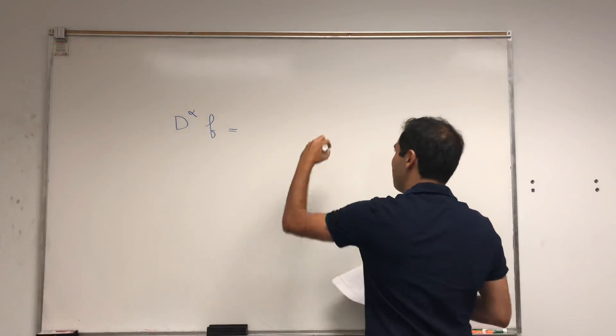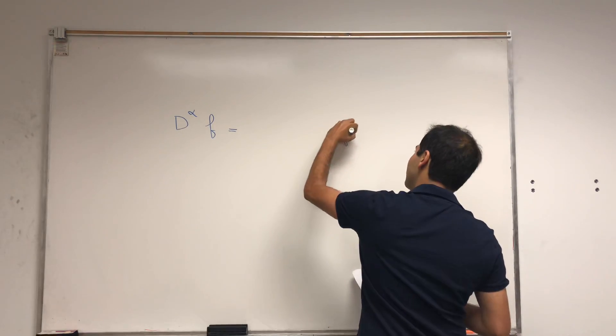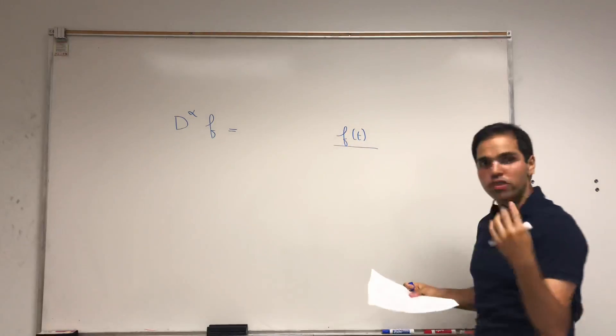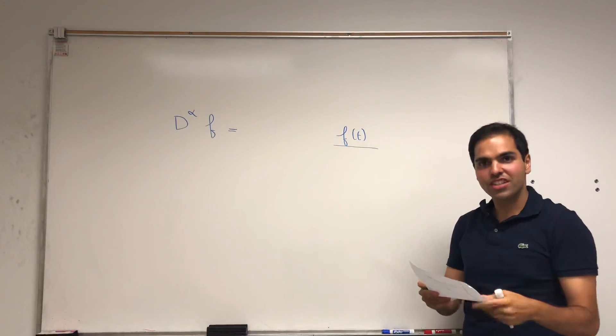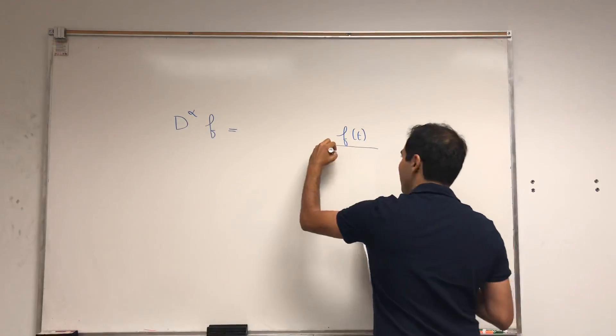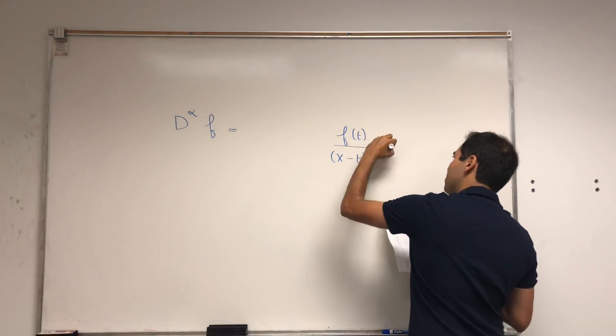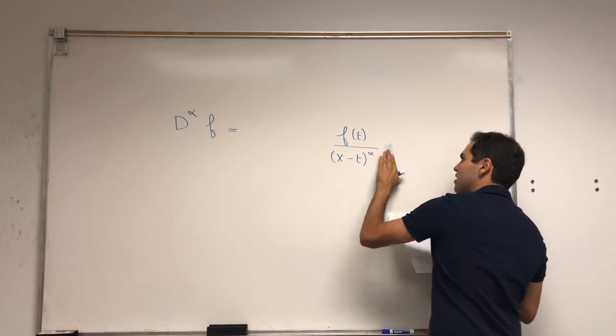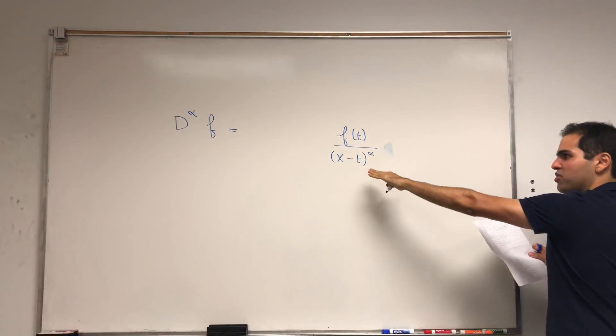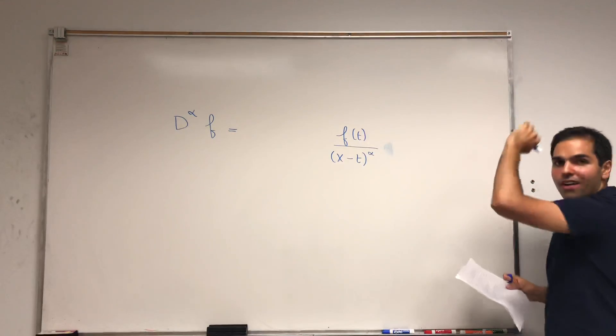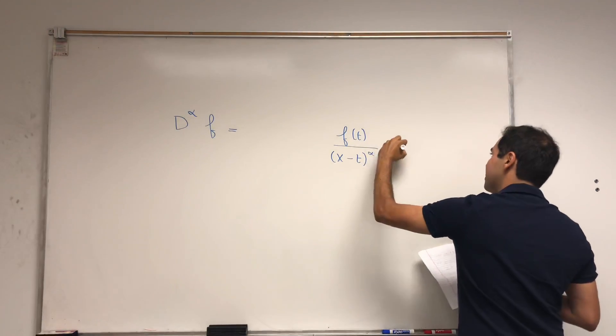Here's what you do: you take the function f and you take some sort of a weighted average. That's very bad at x, so x minus t to the alpha. You divide it by this term that makes this function blow up at x, and then you integrate it.